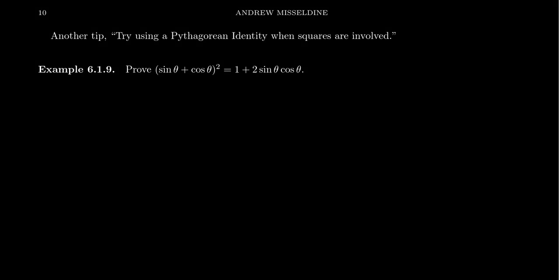Another tip you can use for proving trigonometric identities is the following: try using a Pythagorean identity when squares or square roots are involved in the identity.